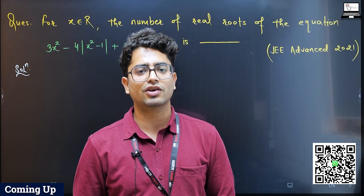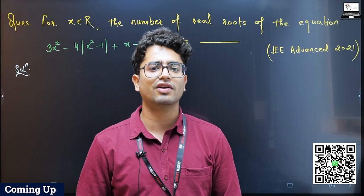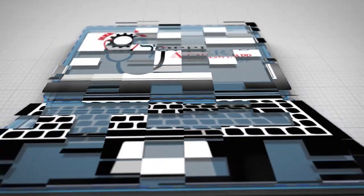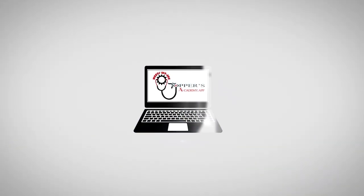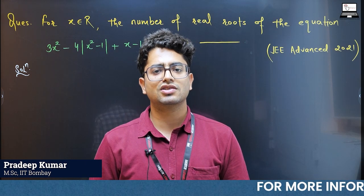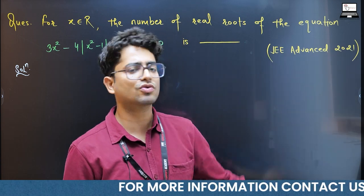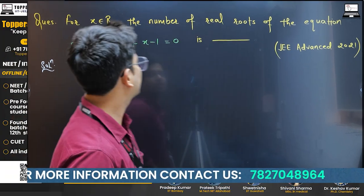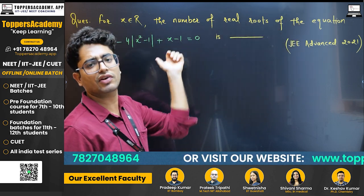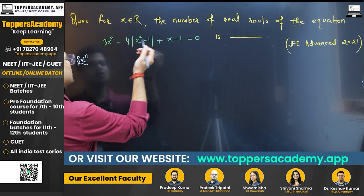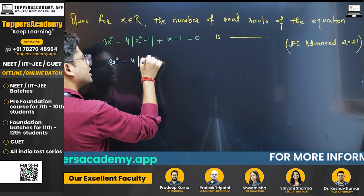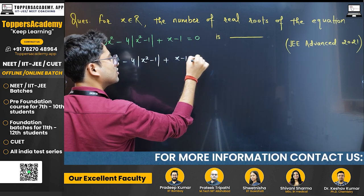In this video, we'll discuss one more question from your PYQs and this is the question from JEE Advanced 2021. The question is: for x belonging to real numbers, find the total number of real roots of the given equation. The equation is 3x² - 4|x² - 1| + x - 1 = 0. So let's solve this.